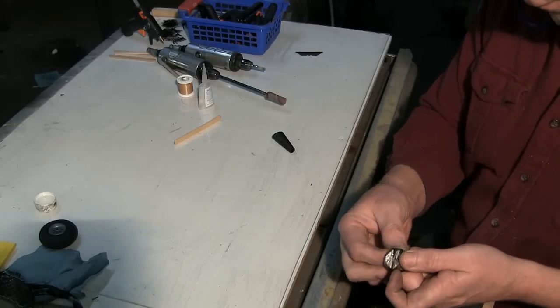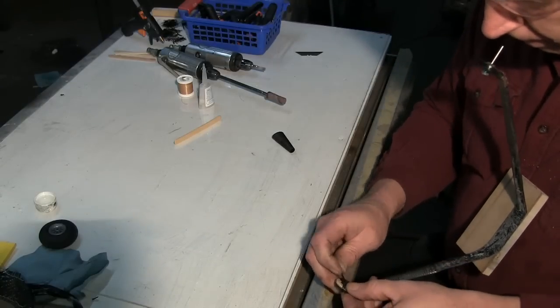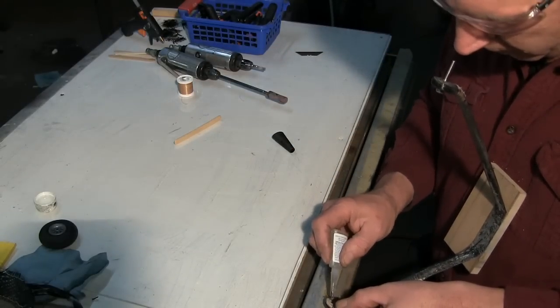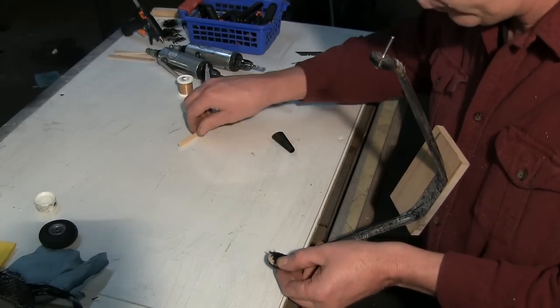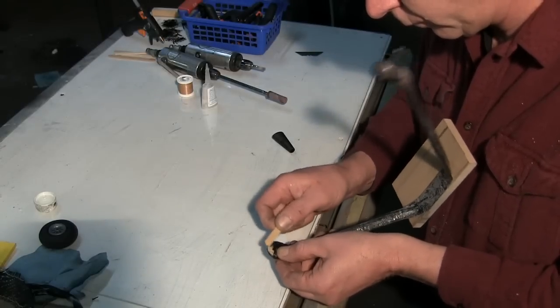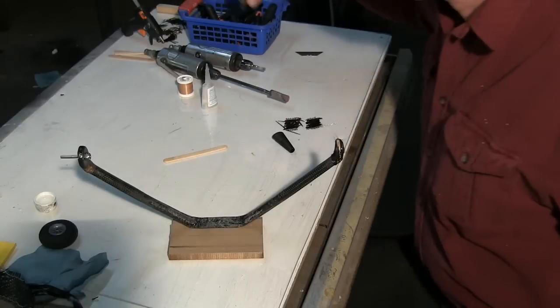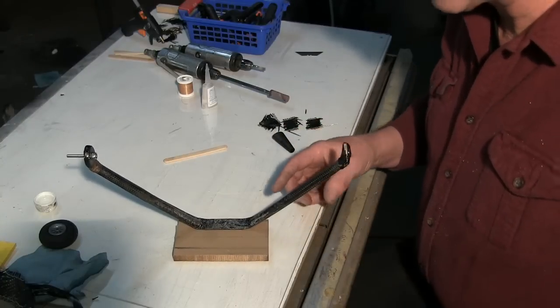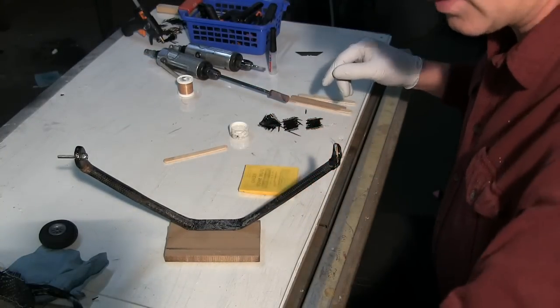I kind of try and keep it nice and flat. There we go. Okay. Put a little more super glue on here. Now I need to put a little material on the back side here where the nut is going to crush up against it.